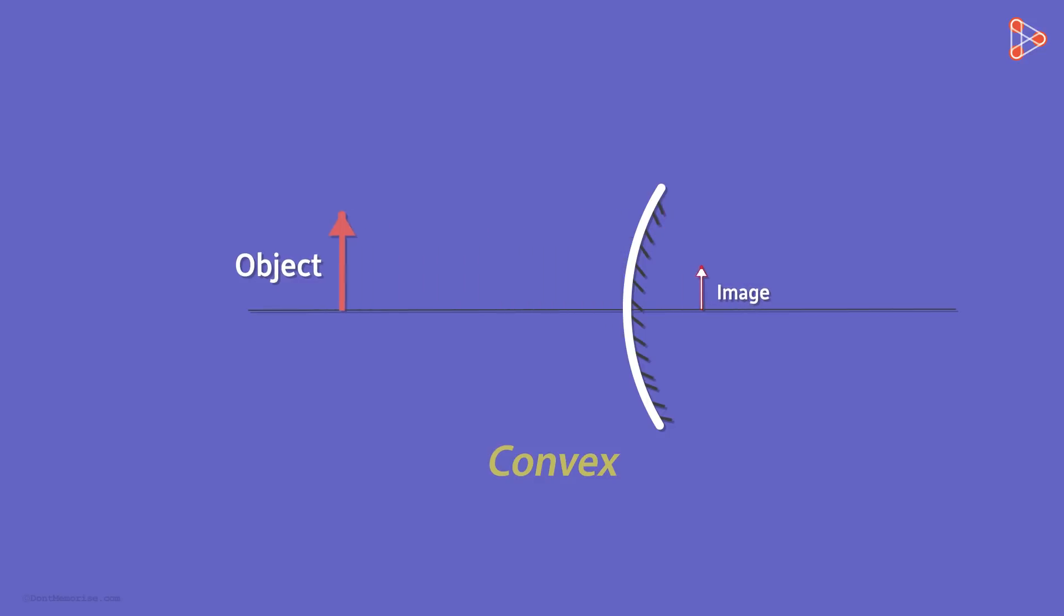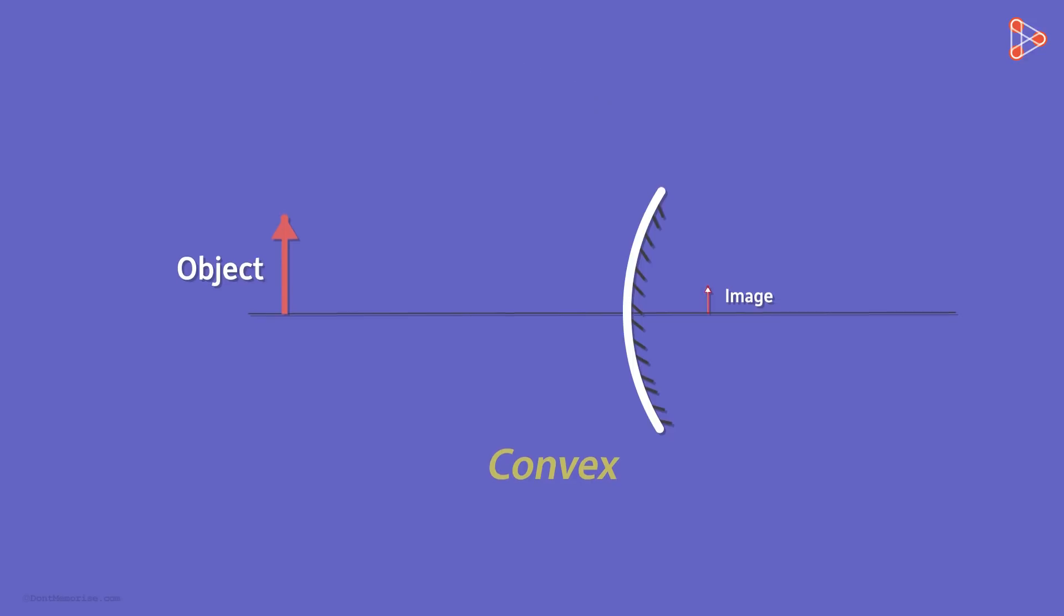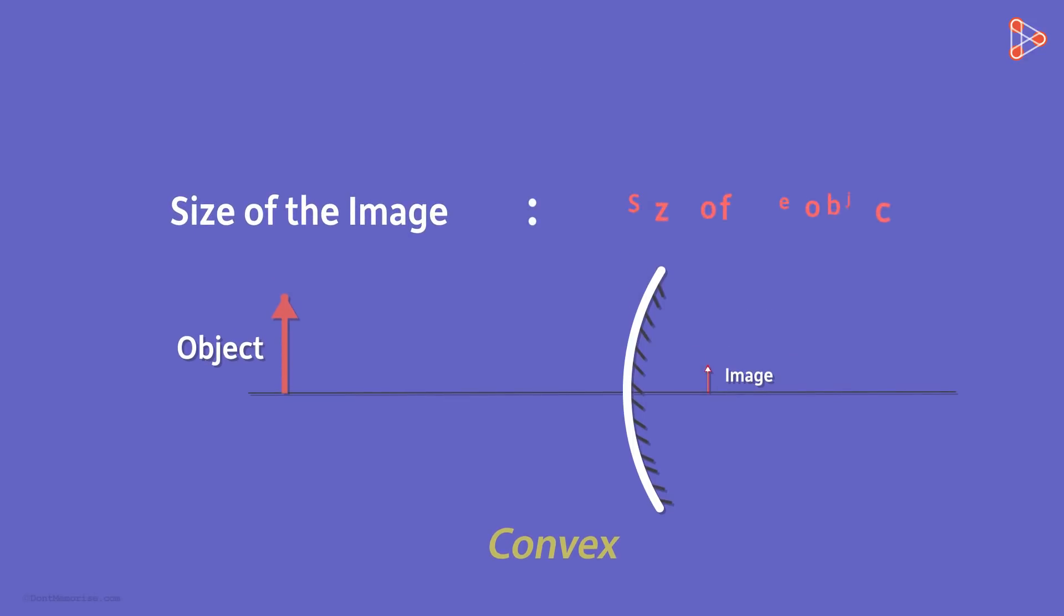Now if we were to compare the size of the image with the size of the object, then we will take their ratios. That is, the ratio of size of the image to the size of the object. And this ratio is what we call magnification. It's denoted by the letter M.